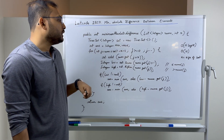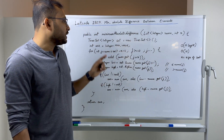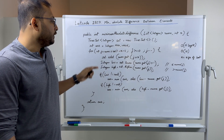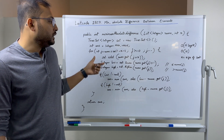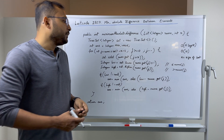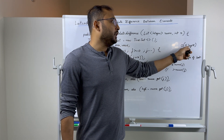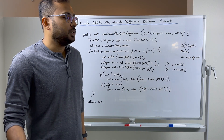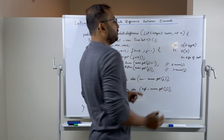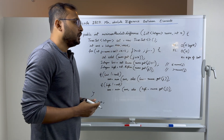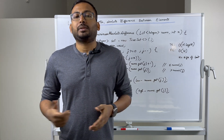The time complexity is O(n log n): we iterate through the array in O(n) and each insert, lower bound, and upper bound operation on the set takes O(log n). The space complexity is O(n) because we store up to n elements in the set. If you have any doubts, add a comment and I'll reply. If you learned something today, feel free to like, share, and subscribe. Thank you.